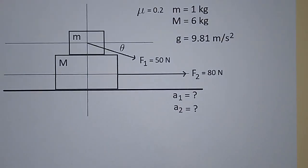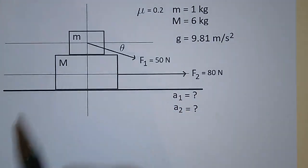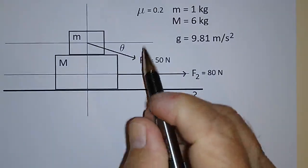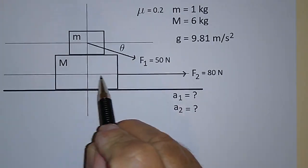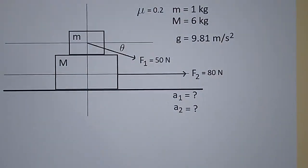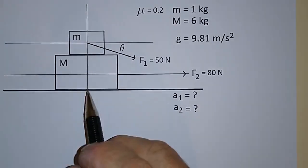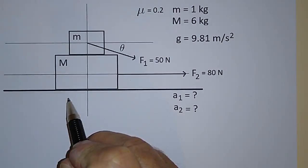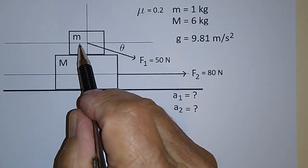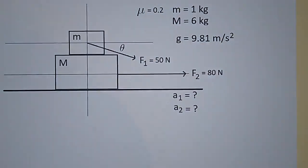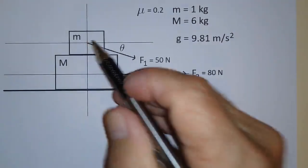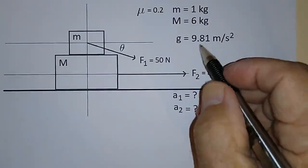Here's a dynamics problem that's a little harder to get your head around. We have a mass big M and a mass little m. We're going to push on little m with a force F1 so that it starts to move in one direction, and simultaneously push on big M with a force F2 in another direction. There's friction between all surfaces — between big M and the plane, and between little m and big M. The coefficient of sliding friction in all cases is μ = 0.2. Mass of little m is 1 kilogram, mass of big M is 6 kilograms, and g = 9.81 m/s².